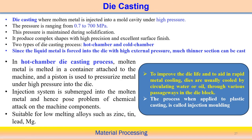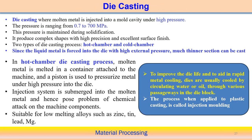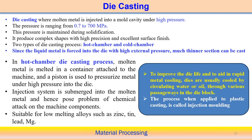High pressure die casting operates at pressures ranging from 0.7 to 700 MPa, and similar pressure is maintained during the solidification process as well. It produces very complex shapes with high precision and excellent surface finish. Because liquid metal is forced into the die cavity under external pressure, very thin sections can be produced. Die casting can be processed in two ways: hot chamber and cold chamber processes.